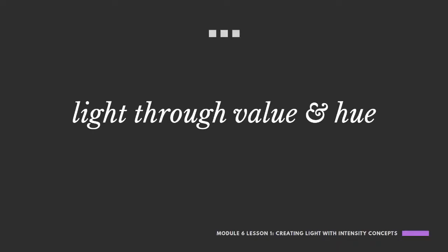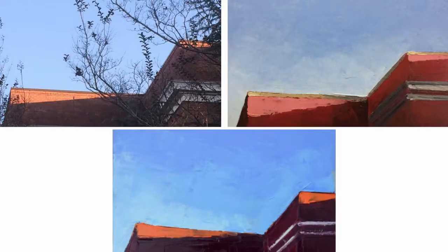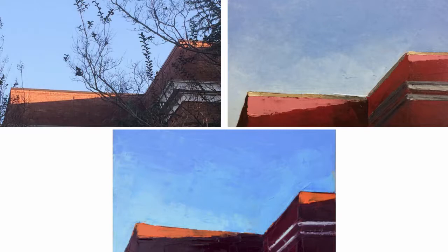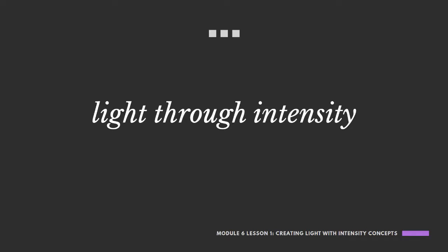In the last module we covered light through value and hue. As we painted this building, we thought about the difference between the local color — which you see in the painting on the right at the top — and using more optical color. To create that sense of illumination, we used the adjacent or close, next-closest intense lighter color to lighten our main color, and a close but inherently darker color to stand in for our shadows. So we were not mixing color by adding white or black, which would have given us local color. This module, we're going to add to our arsenal of tools the ability to create light through intensity.